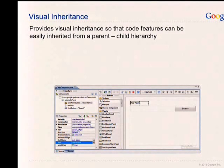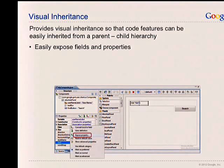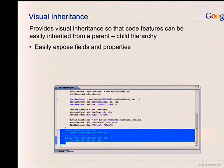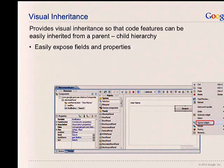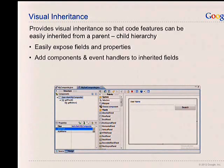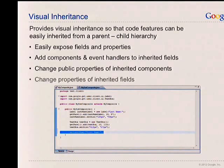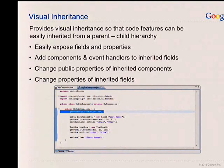Next we have support for visual inheritance. This allows you to create really interesting UIs and then inherit them in subclasses and reuse elements later on. You can easily expose fields of widgets or properties, and it'll generate accessors for you. You can expose entire widgets and then easily add components and event handlers to inherited fields, and change public properties of inherited components. I'm going to do a quick example of this.